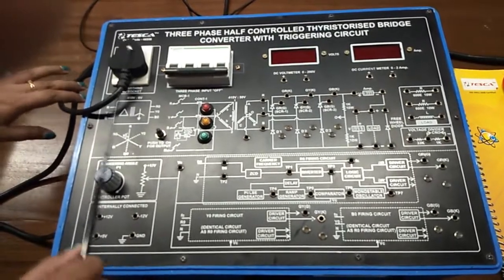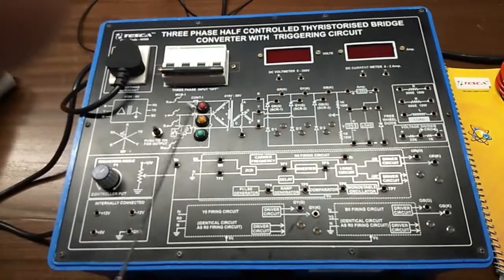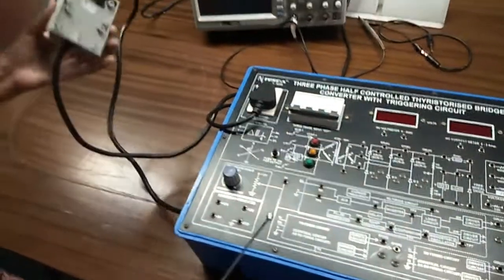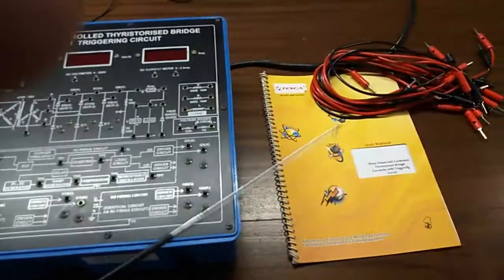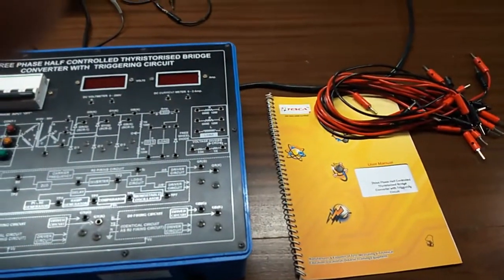Connect the CRO, plug the CRO in this socket and connect this trainer kit with 3 phase power supply like this. This is the user manual and patch cord, these are all included in this kit.